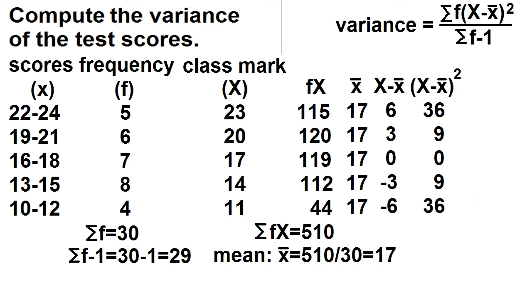The last column is the product of the frequency and the square of the deviation. 5 times 36 is 180. 6 times 9 is 54. 7 times 0 is 0. 8 times 9 is 72. And 4 times 36 is 144.